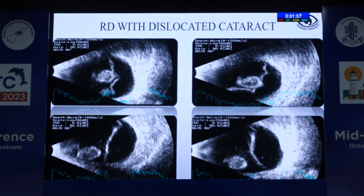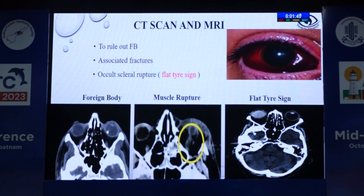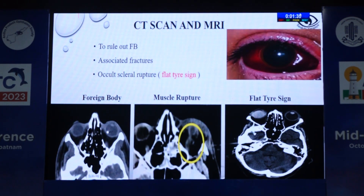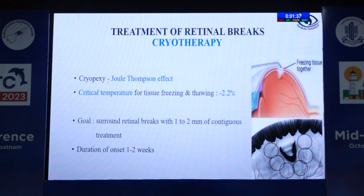B-scan is also useful in RDs with dislocated cataractous lens or eye walls. CT scan or MRI should always be done to rule out occult scleral rupture, especially in cases of the flat tire sign, where you see dense subconjunctival hemorrhage with no view of other features.